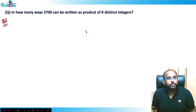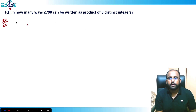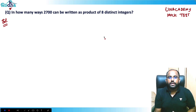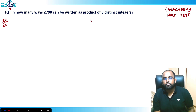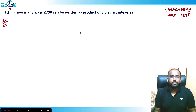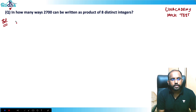Hi guys, let's look at this question. It's a very good question — try it yourself. This question was asked in an Unacademy mock test. The question says: in how many ways can 2700 be written as a product of eight distinct integers? Let's first try to factorize 2700 into its prime factors.